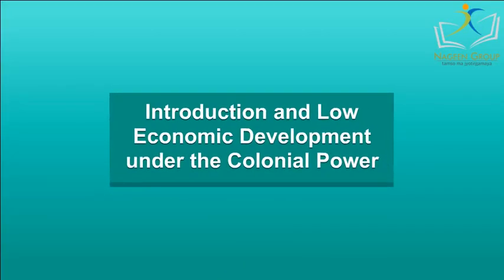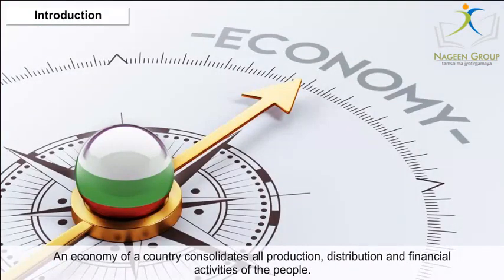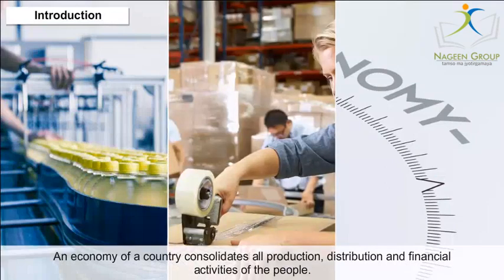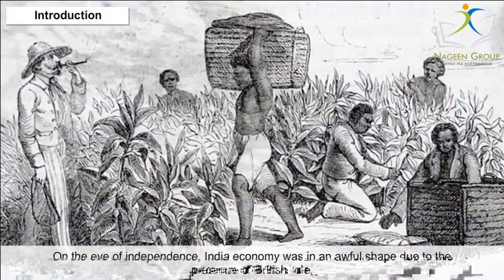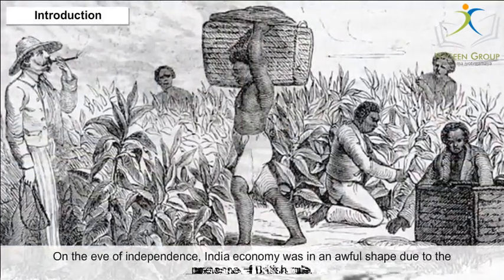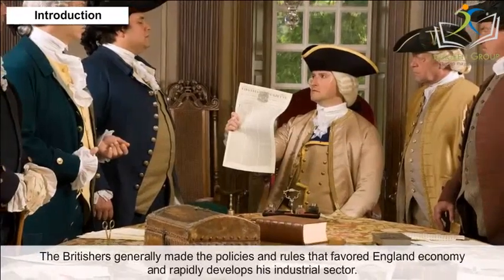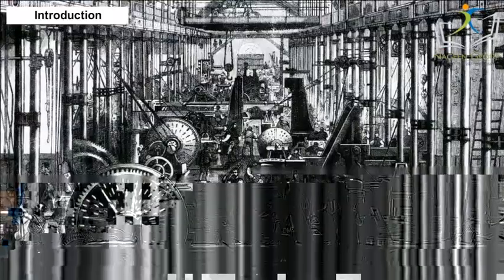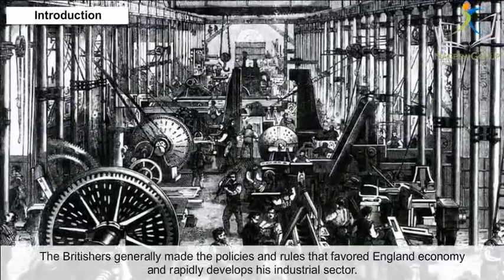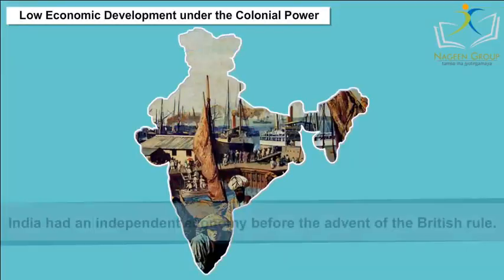Introduction: An economy of a country consolidates all production, distribution and financial activities of the people. On the eve of independence, India's economy was in an awful shape due to the presence of British rule. The British generally made policies and rules that favoured England's economy and rapidly developed their industrial sector.